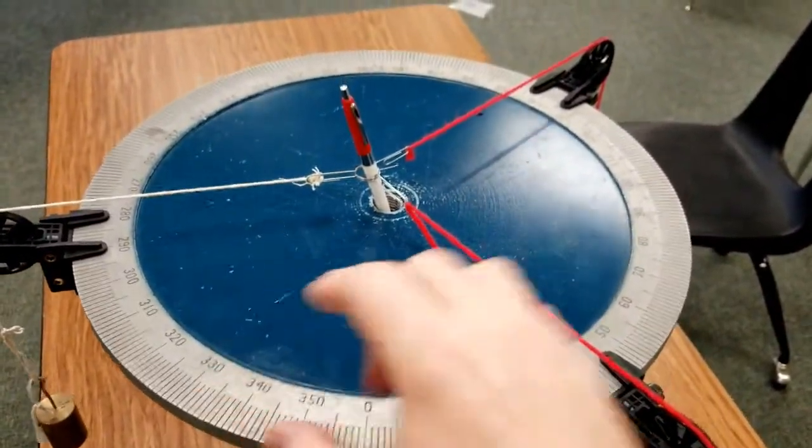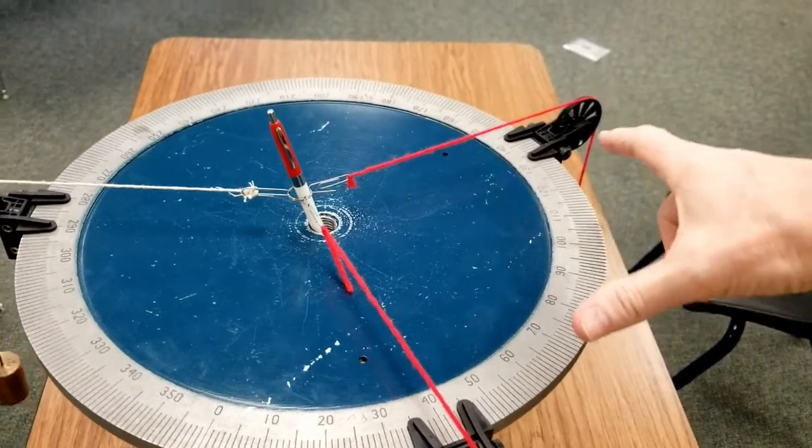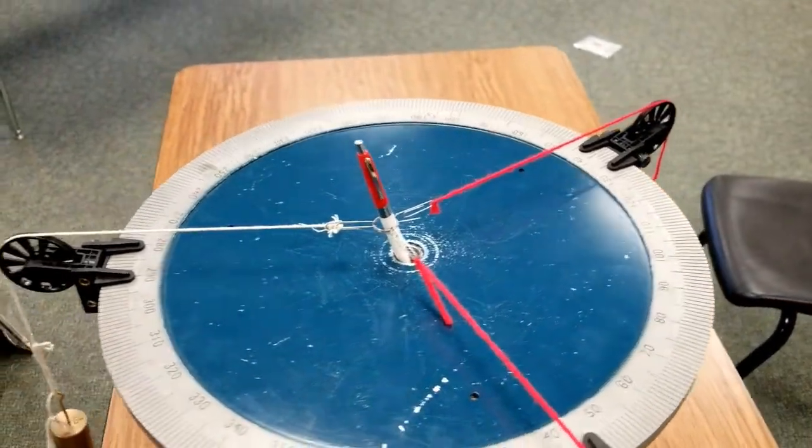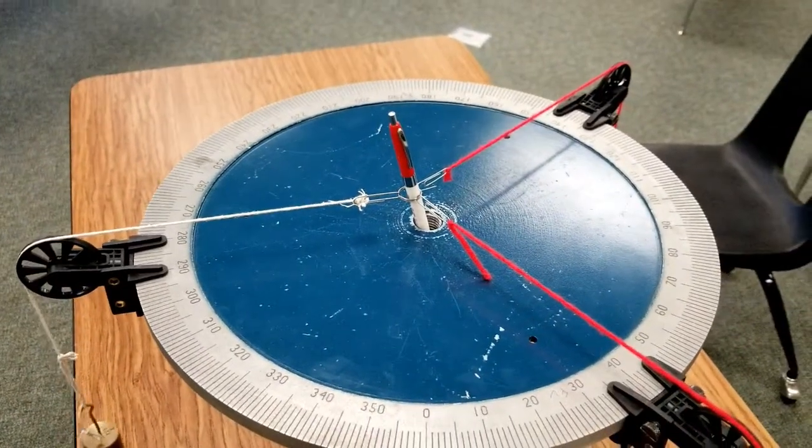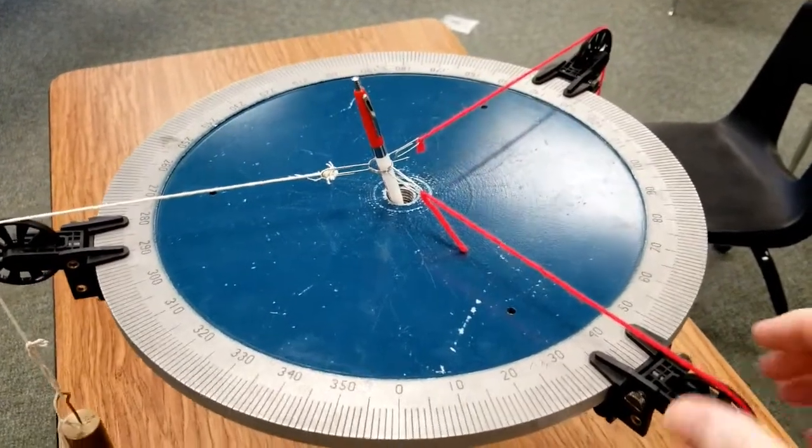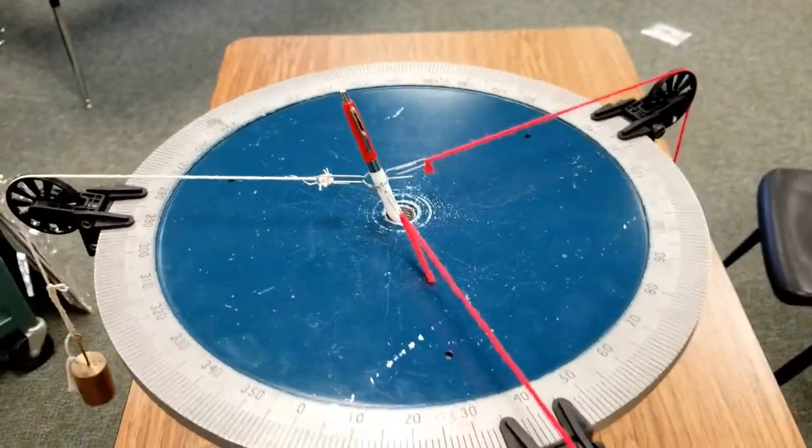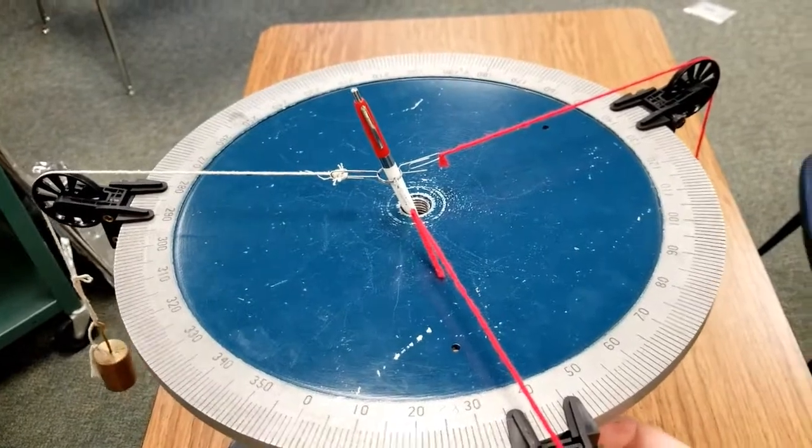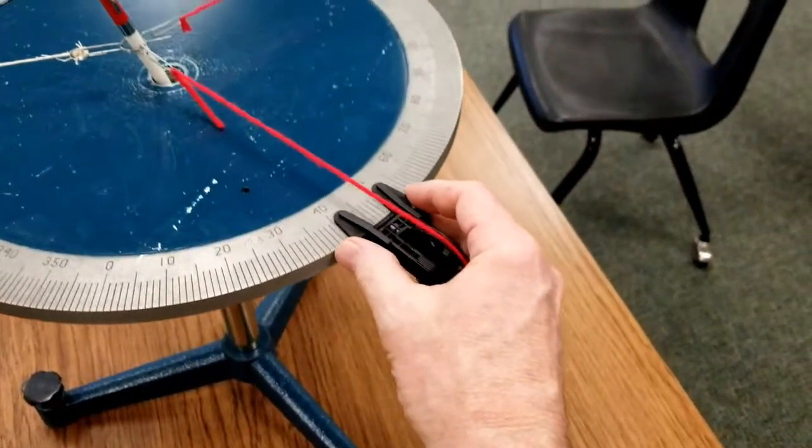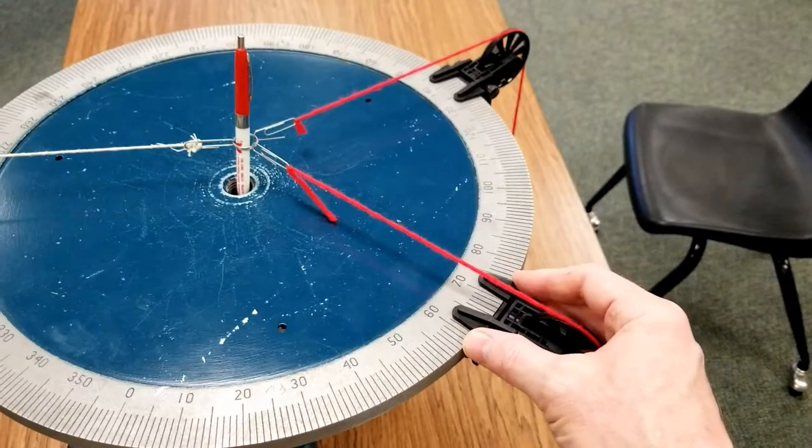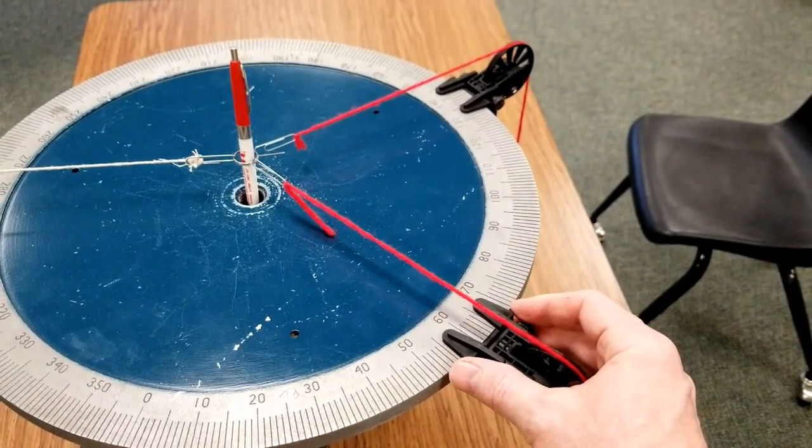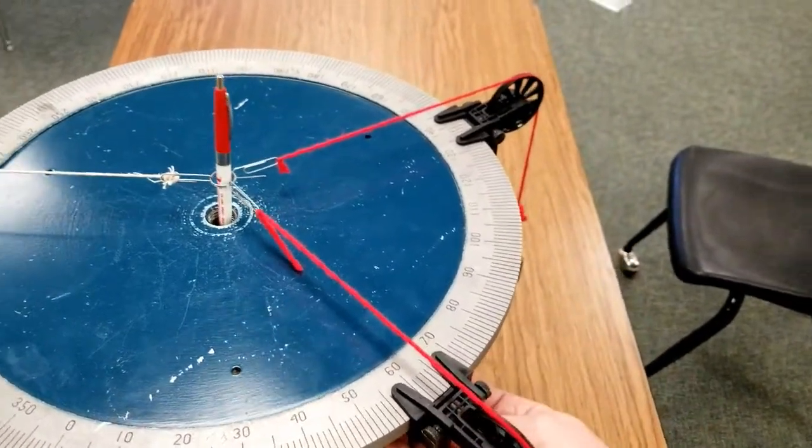Now notice that since it is pulling that way, that means I need to shift these probably closer together over here. And actually, let's see if we can get some of this up. So I'm loosening this one over here and just shifting it around. And notice that the ring is pulling back towards the center. Now, is it perfectly centered or not?